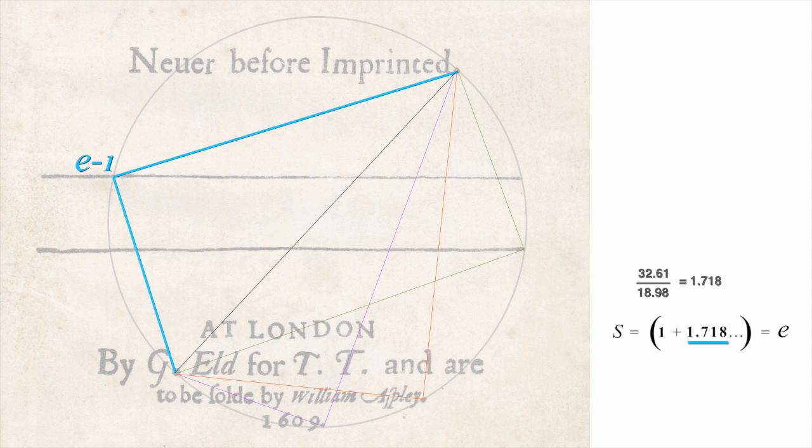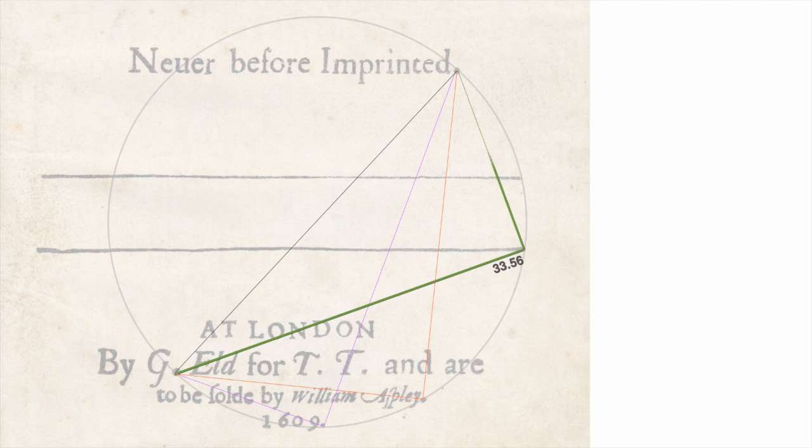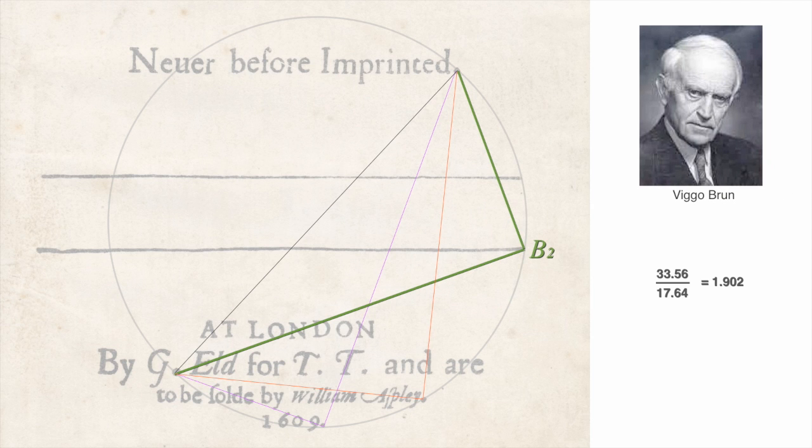Here, we have a constant that's pretty much unknown to the mainstream, 1.902. It's called Brun's Constant, or B2. It concerns a unique category of prime numbers called twin primes. Enormously important in encryption and internet security. But here again, this important constant wasn't known until 1919. And yet, there it is.